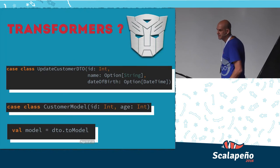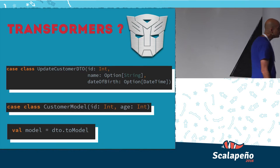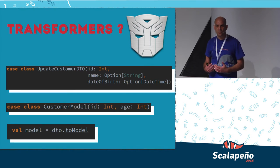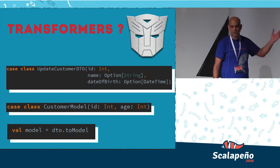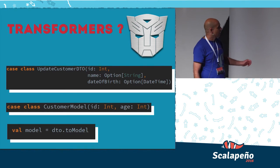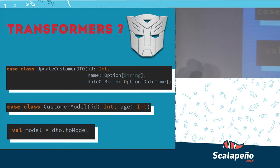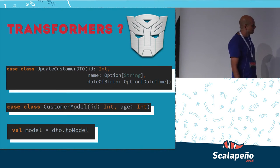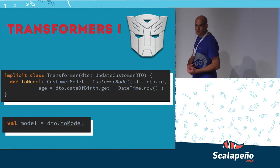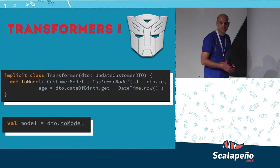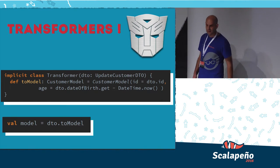This creates another problem: you have a lot of DTOs and case classes — how do you transform or map one to another? Here is a nice Scala tip, and another good example of why Scala is good for public APIs. Take a look at this DTO representing what you expect the user to send when updating a customer: ID is required, name and date of birth are optional. If you want to transform this DTO case class to a model, you can use an implicit class and put the transformation logic there. You get DTO.toModel — a very elegant solution.